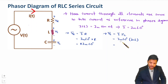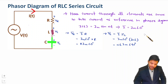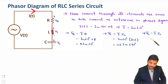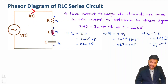Since jωL means an angle of 90°, VL = ωL·Im at angle 90°. For the capacitor voltage, VC-bar equals the current phasor multiplied by impedance ZC = 1/(jωC). Since 1/(jωC) corresponds to a phase of −90°, VC = (Im/ωC) at angle −90°.